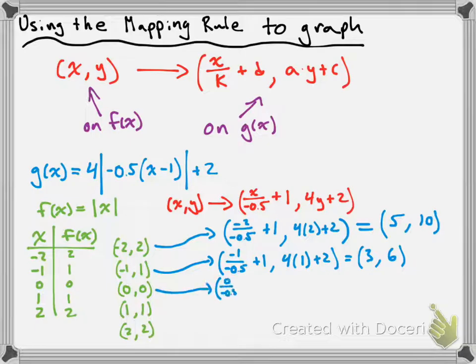Applying the mapping rule to (0, 0): x becomes 0 divided by negative 0.5 plus 1, and y becomes 4 times 0 plus 2. 0 divided by negative 0.5 is 0, plus 1 is 1. And 4 times 0 plus 2 is 2. So I have the point (1, 2) on my transformed function.